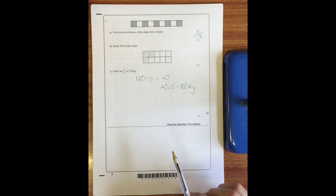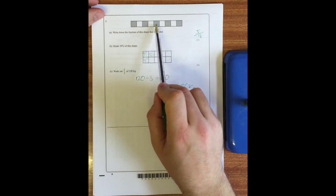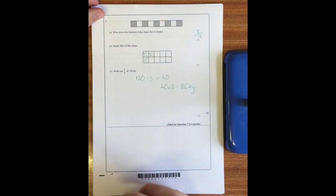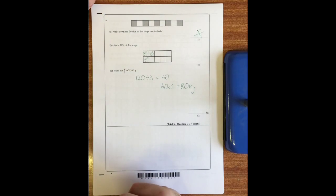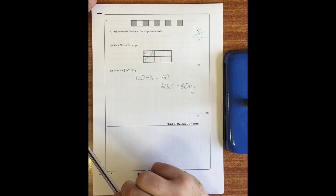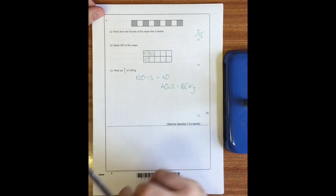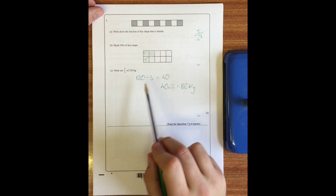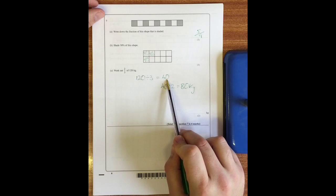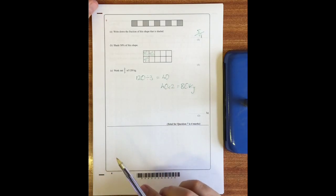Question seven: write down the fraction of the shape that is shaded. There are one, two, three, four, five shaded in, and five, six, seven, eight, nine all together, so it's five ninths. Shade 30% of this shape. There are 10 squares so that means that each square is worth 10, because 100 divided by 10 is 10, so we need to color in three squares - any three squares colored in is fine. Question C: work out two-thirds of 120. To do that you divide by the bottom, so 120 divided by 3 which is 40 - again you can use a calculator for that - and then 40 times two is 80.